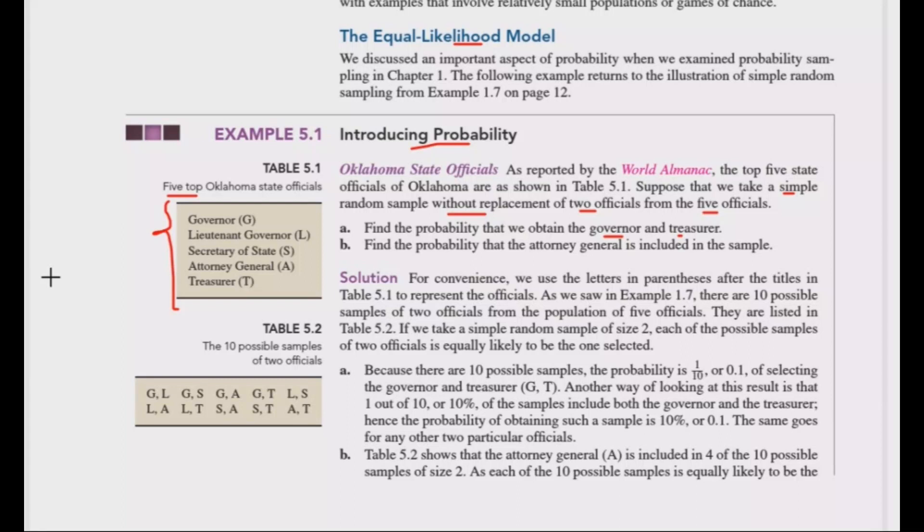In this example, we need to determine the probability. To find all possibilities, we use combinations. Five combination two equals ten, so there are ten possible ways to select two officials without replacement. This gives us our sample size for the probability calculation.